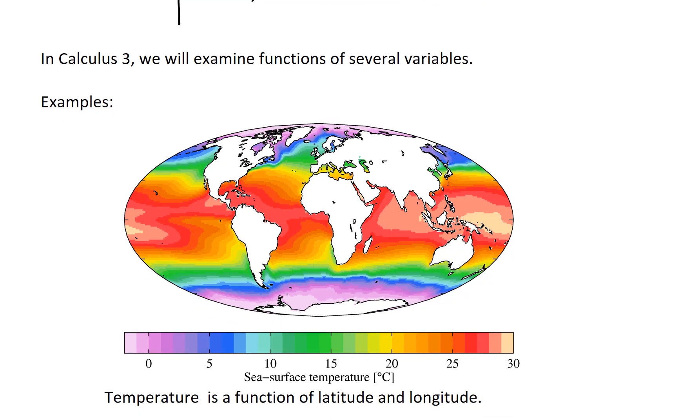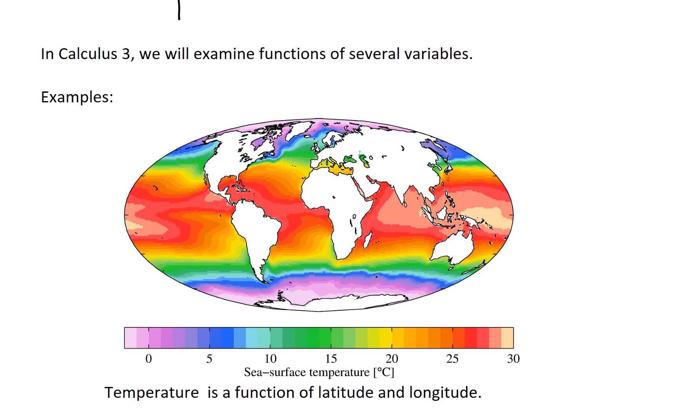So first of all, think about sea surface temperature. This is a really nice example of a function of at least two variables. So you can imagine latitude and longitude being two input coordinates, and then the output is temperature. And that's visualized in this graph with color.